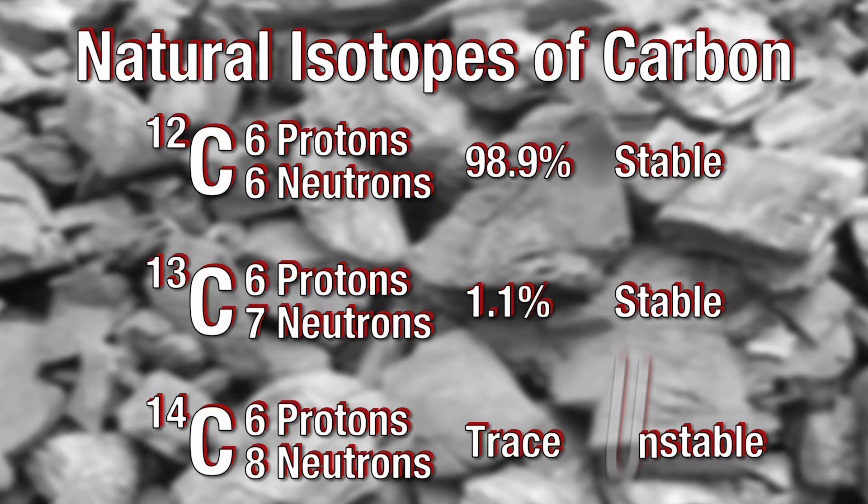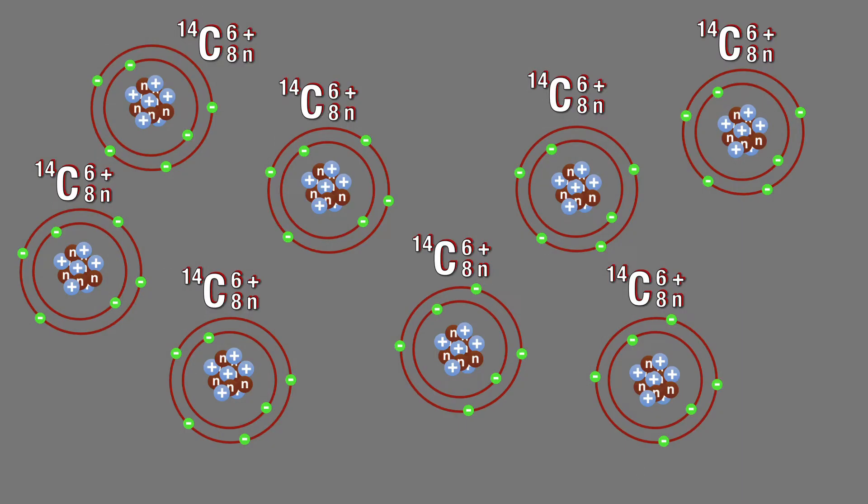Some isotopes are unstable or radioactive and will decay into other elements, such as carbon-14, which will decay into nitrogen-14.